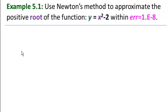In this video, we're going to solve our first example using Newton-Raphson's method. Example 5.1: Use Newton's method to approximate the positive root of the function y equals x squared minus 2 within an error of 10 to the minus 8.